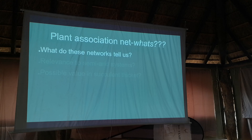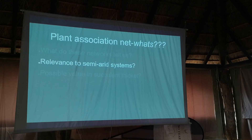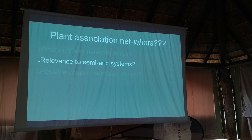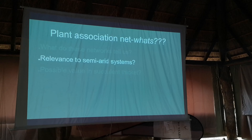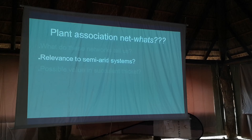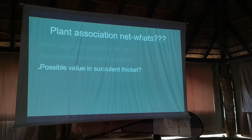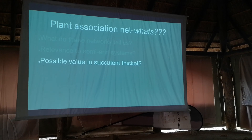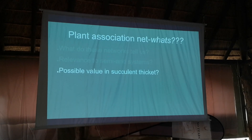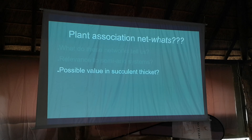This has been done in quite a few semi-arid systems. There's a beautiful paper where they did a global analysis using plot data, looking at global trends in how plants are interacting in semi-arid systems - looking at the roles of facilitation, competition, and mutualisms. It does seem to be quite a common occurrence in arid and semi-arid systems, which could be really relevant for succulent thicket because we're still trying to figure out what processes maintain such a productive and biodiverse system under such harsh conditions.